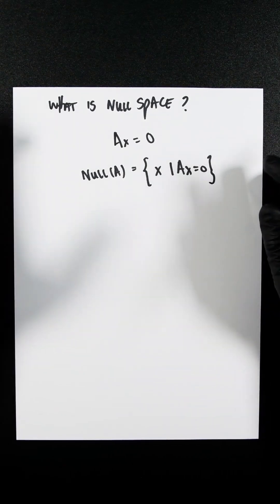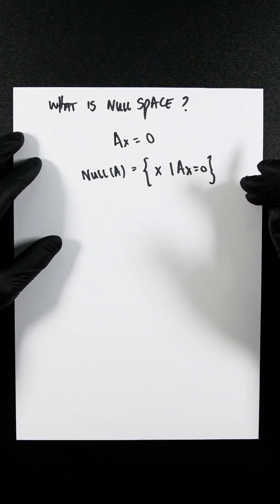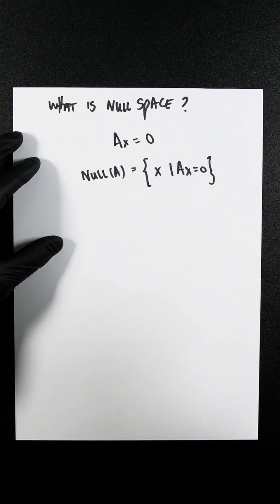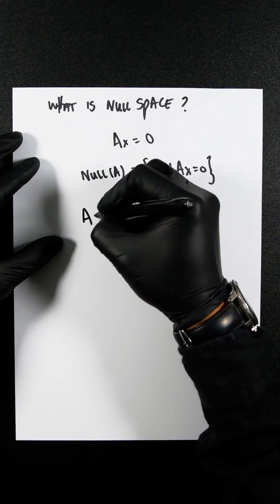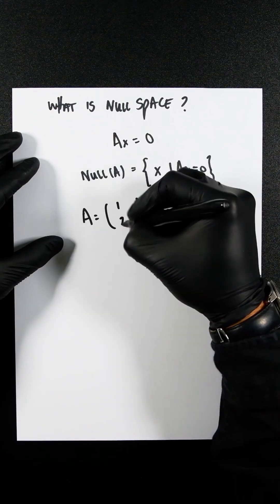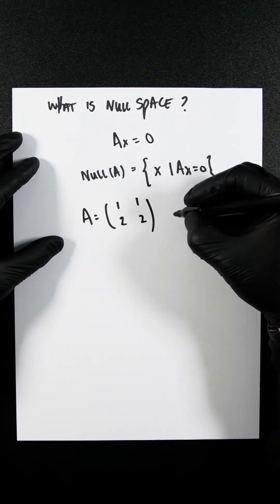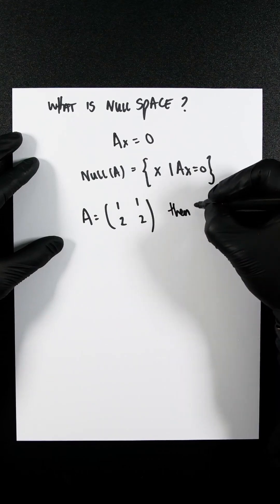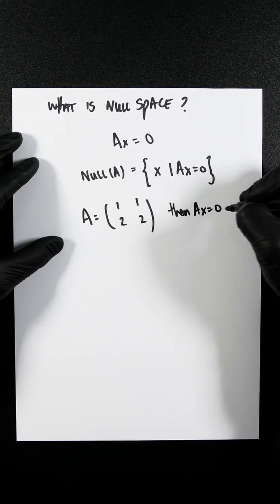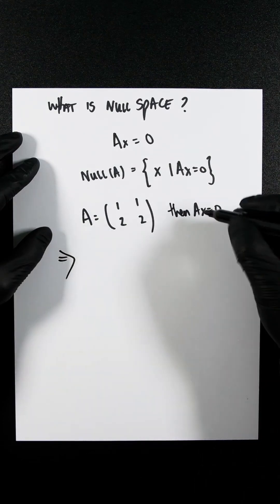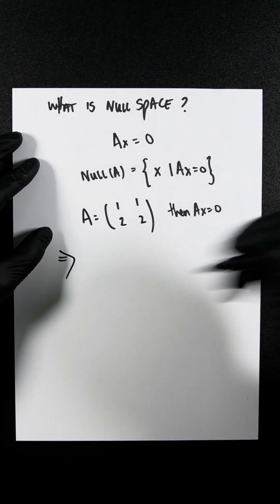It represents all inputs that a matrix transformation crushes to 0. So let's take an example. If we have A, and it's 1, 1, 2, 2, that's a naughty matrix. Then Ax equals 0. So pretend that's there, and then I've carried on.